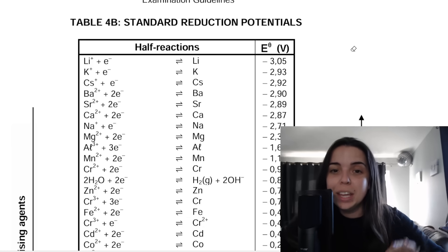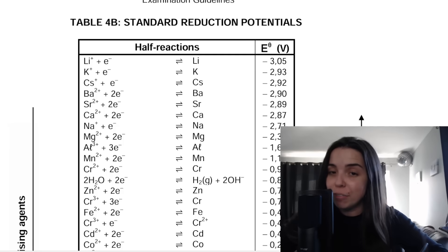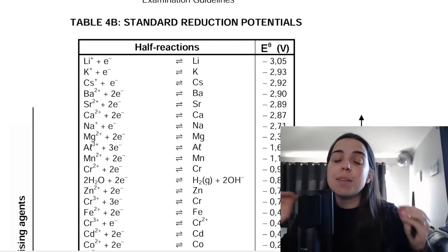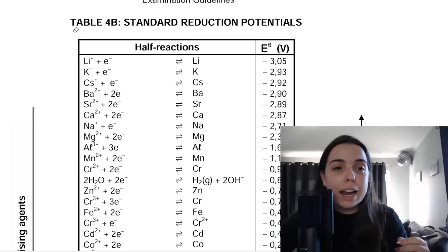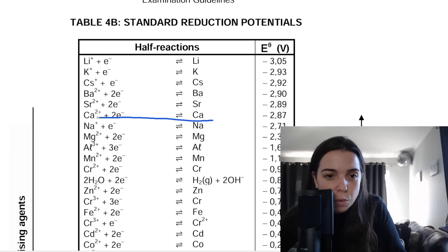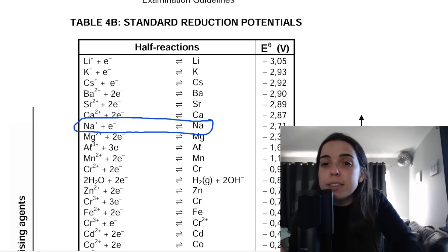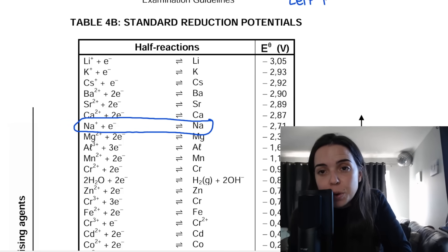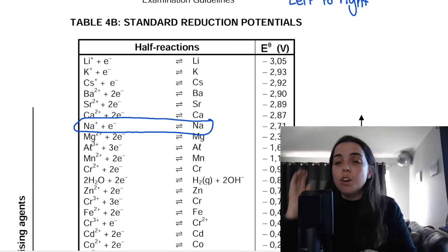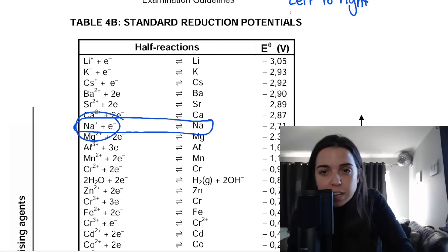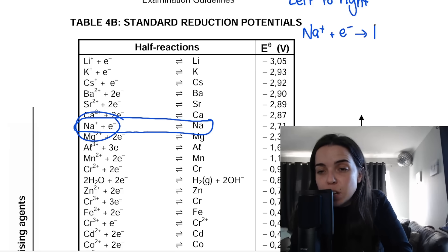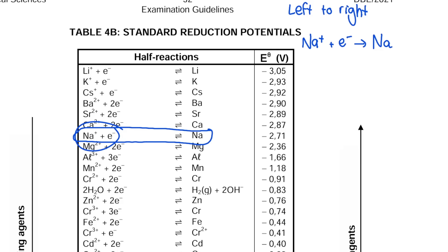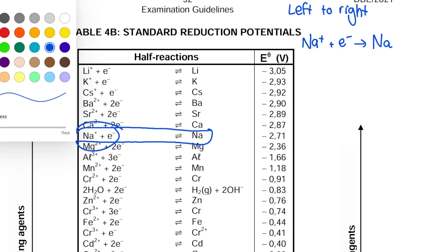The table consists of a bunch of half reactions. These are called half reactions because we have the ability to write them either from left to right or from right to left. For example, take the half reaction containing sodium. Written from left to right, we start with Na+ plus e−, giving us solid sodium. Or we can take that exact same reaction and write it in reverse — from right to left.